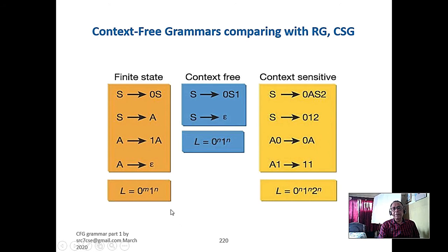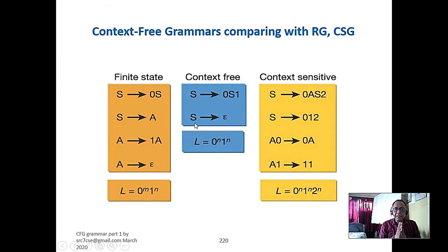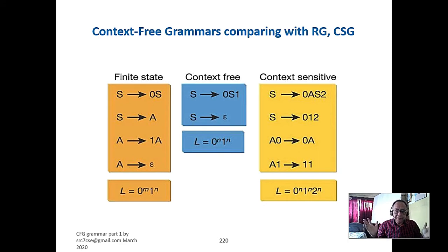Now coming to the context free grammar. This is Type 3 grammar. Now there is context free grammar — what is the difference between context free and regular grammar? Context free means the left-hand side can be only one variable. It may be the start variable or other variables also. A language consists of definitely a start variable, more variables, and definitely one terminal. There must be more than one terminal.